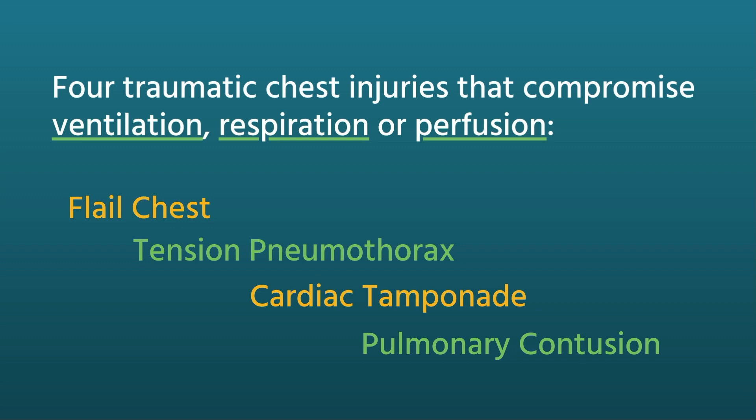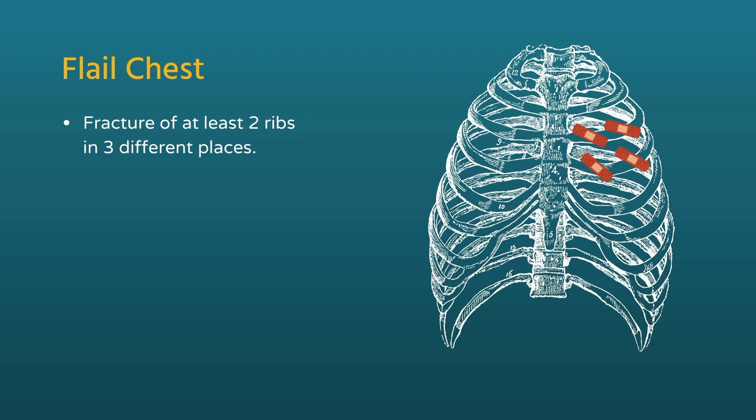The first one is flail chest, and it's one of those injuries that often gets missed by EMS providers — not for lack of trying, but because everybody expects to see the characteristic paradoxical motion in that patient. When you've got a fracture of at least two ribs in three different places, you have a very unstable portion of the chest.